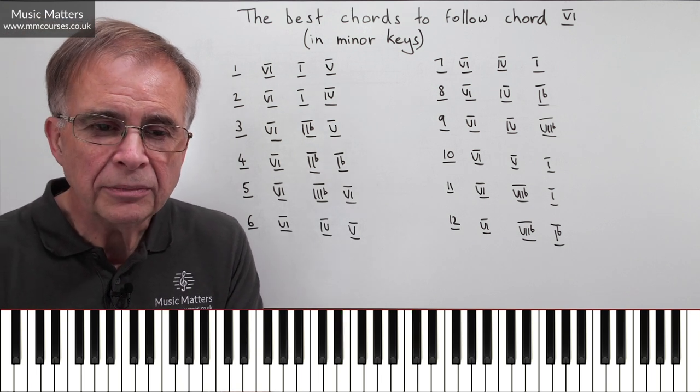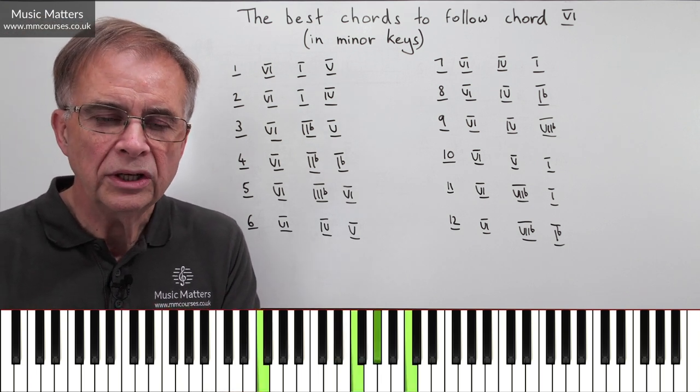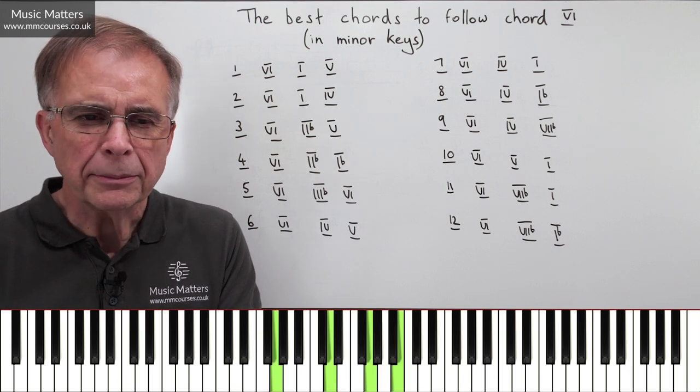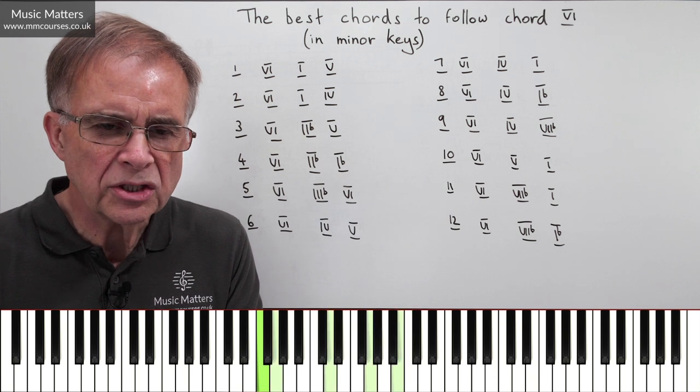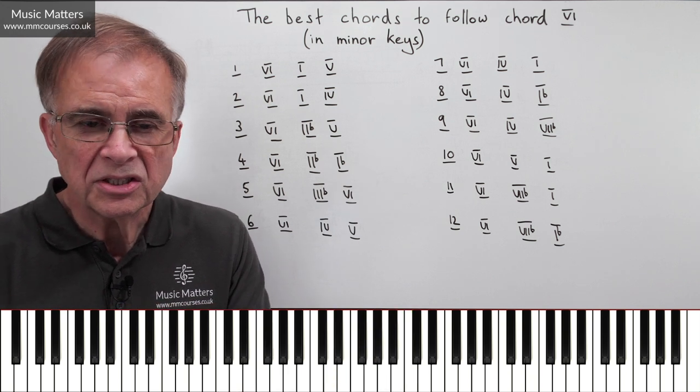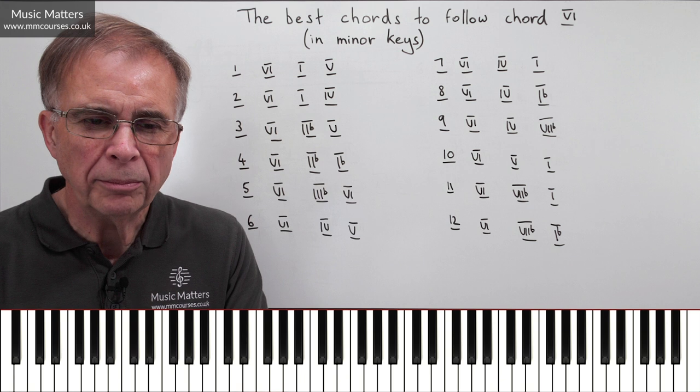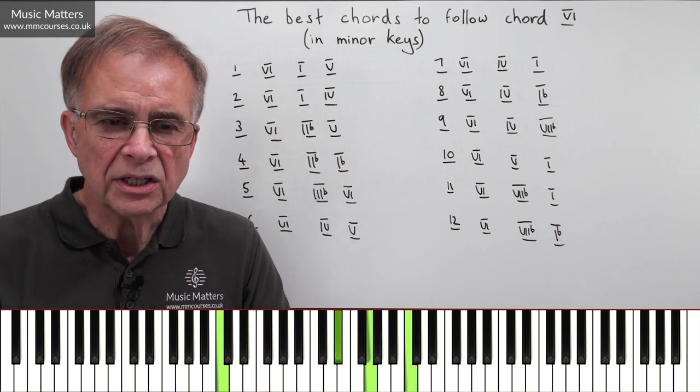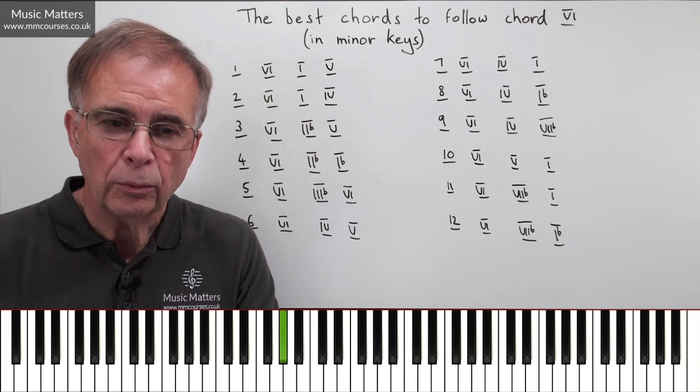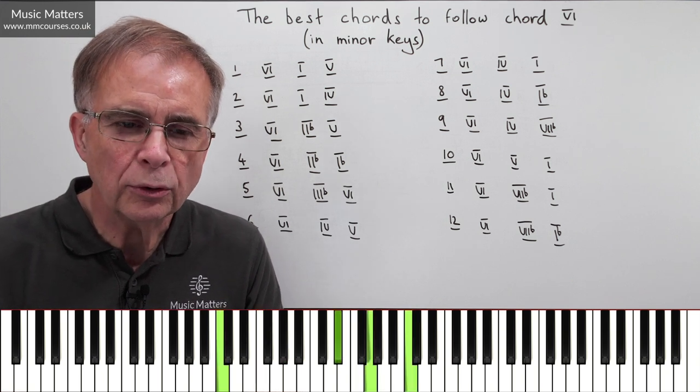Option VI is to go from VI to IV to V. That's perhaps a bit more conventional. Pretty solid chord progression there. Option VII, also fairly common, VI to IV to I. So you're just using VI before what could be a cadence, IV to I.